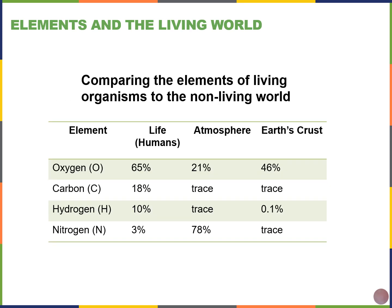These elements are present in different proportions depending on the location. In humans, for example, oxygen makes up the greatest proportion of the four elements. In the atmosphere, however, nitrogen makes up the highest proportion of these four elements.